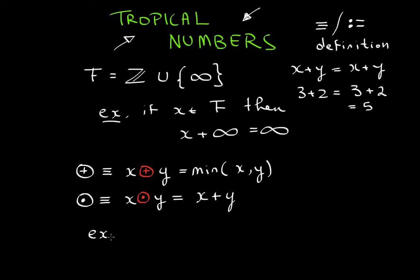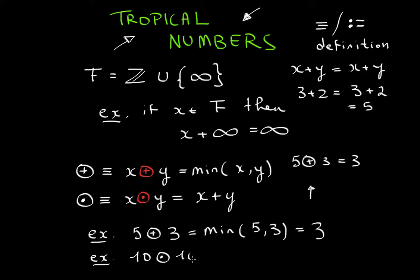So when you work in this number system, if I were to give you five circle plus three, then the answer would be the minimum of five and three, which we clearly know has to be three. And if I were to give you another example, what's ten circle times one hundred? Then I would be doing ten plus one hundred, and it would be one hundred and ten.